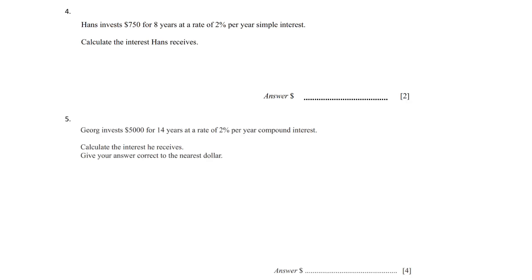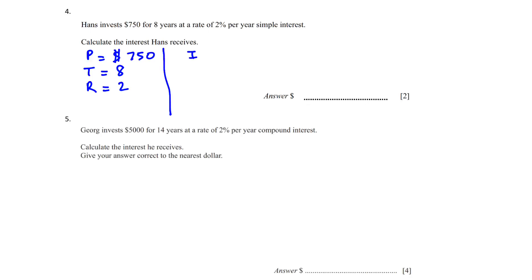Question 4: Hence invests $750 for 8 years at a rate of 2% per year simple interest. Calculate the interest Hence receives. Principal = 750, T = 8, R = 2. Using I = PRT/100: I = 750 × 2 × 8 ÷ 100 = $120.